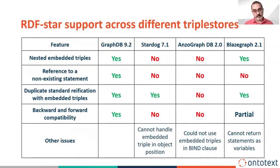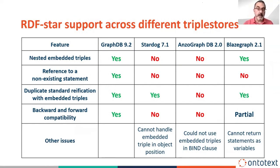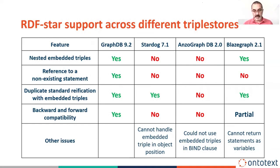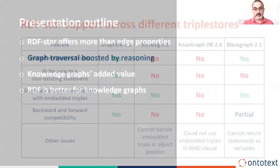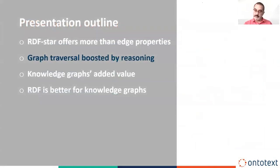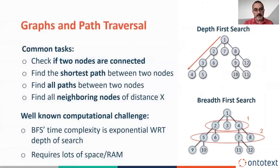We also did our homework to see how other engines handle different corner cases, like statements about statements about statements — nested embedded triples — or how they deal with situations where you delete a triple from your repository but want to maintain information about who deleted it and when. So the statement is gone but you can still keep metadata about it. We took care to handle these edge cases well. So by now you should be convinced that edges and edge properties are covered very well in the RDF space.